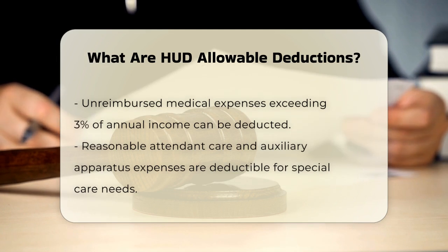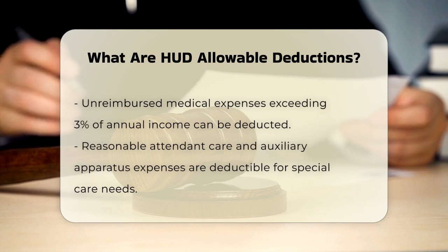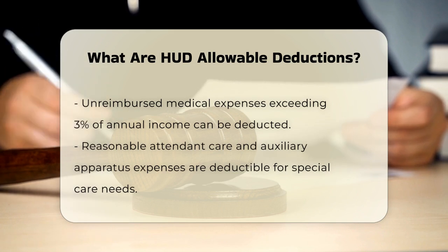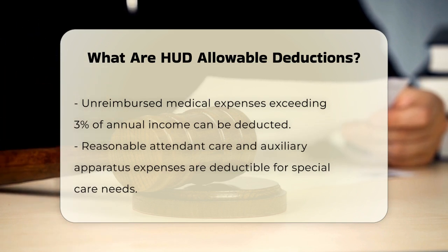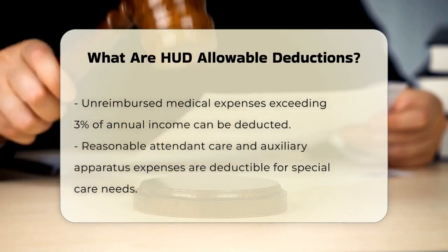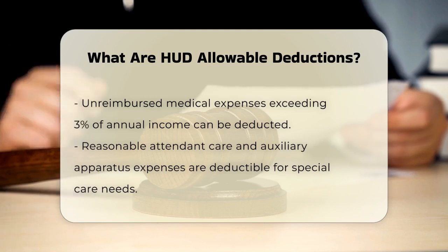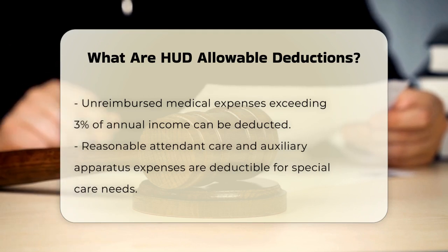Another important deduction is for unreimbursed medical expenses. If these expenses total more than 3% of the family's annual income, they can be deducted. This is particularly helpful for families with significant medical costs.